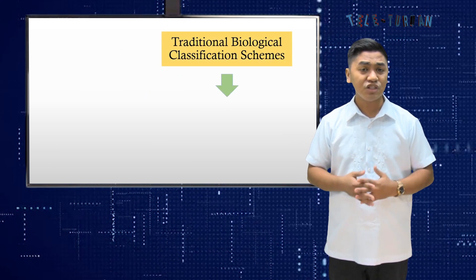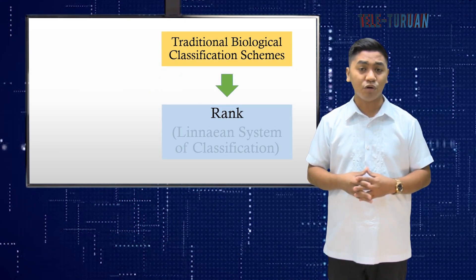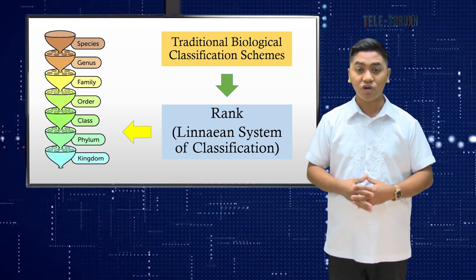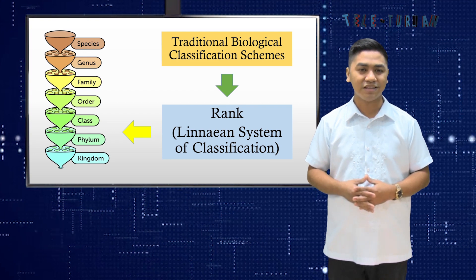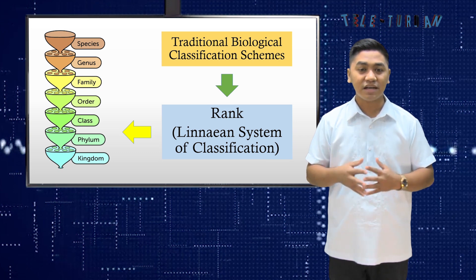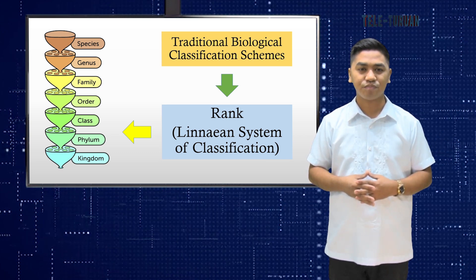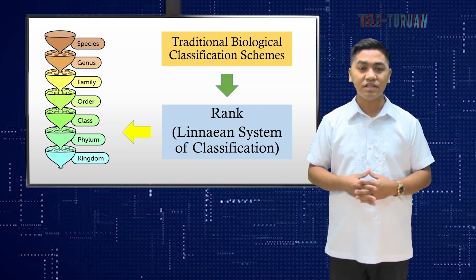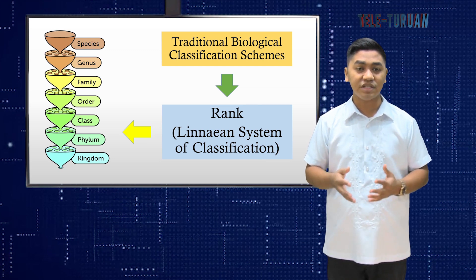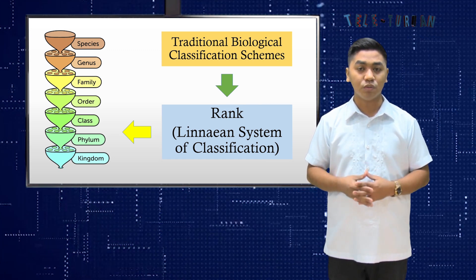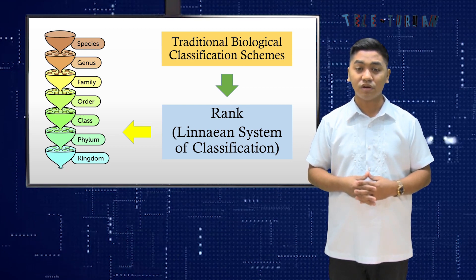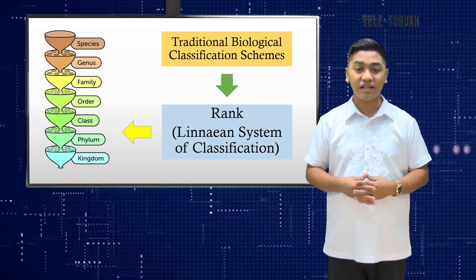Traditionally, biological classification schemes included the idea of ranks such as species, genus, family, order, class, and so on. In this system, the Linnaean system, for example, there is a class Reptilia and a class Aves. However, the bulk of evidence supports, and the majority of scientists now agree, that the group Aves belongs within the larger group Reptilia — or that birds share a most recent common ancestor with crocodiles, which are generally included in the class Reptilia.